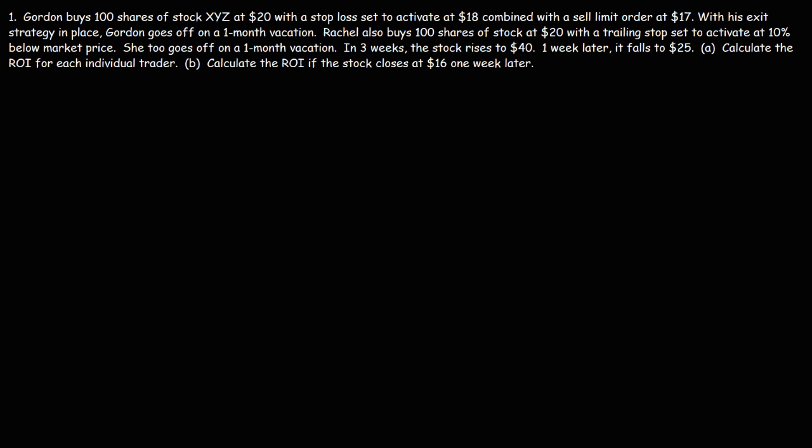Number one: Gordon buys 100 shares of stock XYZ at $20 with a stop-loss set to activate at $18 combined with a sell limit order at $17. With his exit strategy in place, Gordon goes off on a one-month vacation.